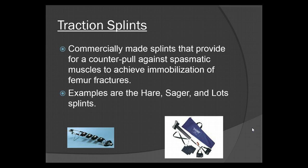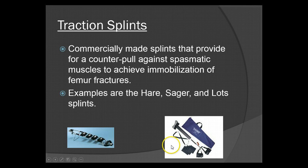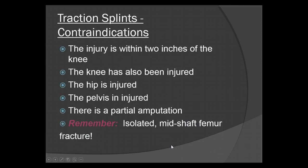Traction splints are commercially made splints that provide a counterpull against spasmatic muscles to achieve immobilization of femur fractures. Examples are the Hare splint, the Sager splint, and the lot splints. Contraindications for a traction splint are injury within two inches of the knee, injuries where the knee has also been injured, hip injuries, pelvis injuries, or partial amputation. Isolated mid-shaft femur fractures only.